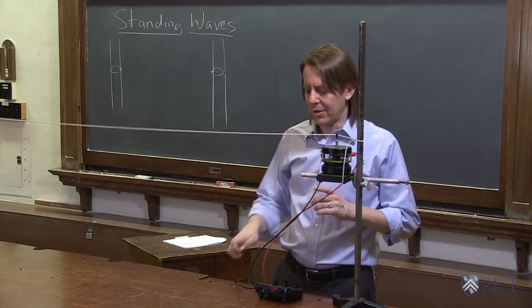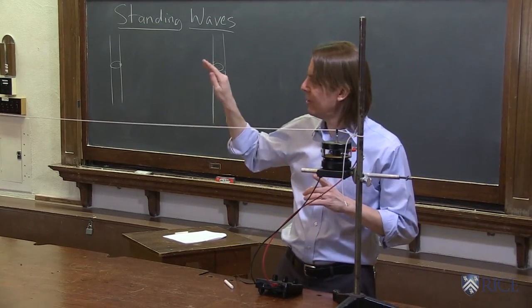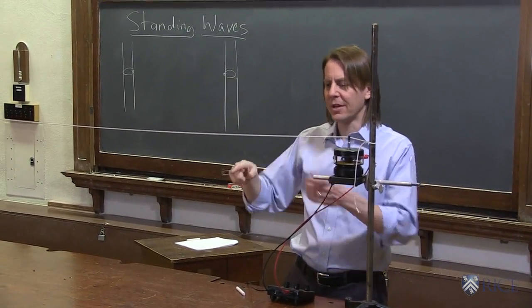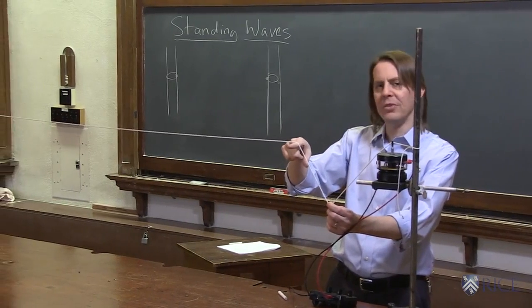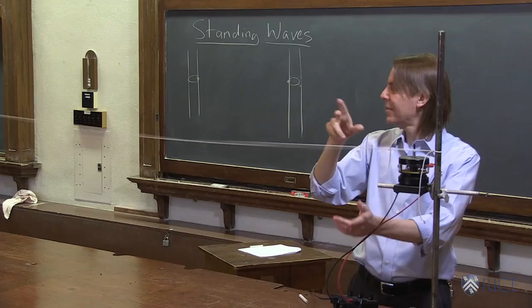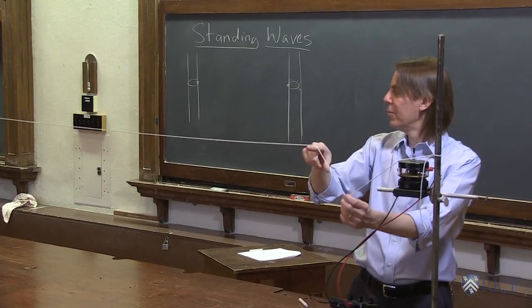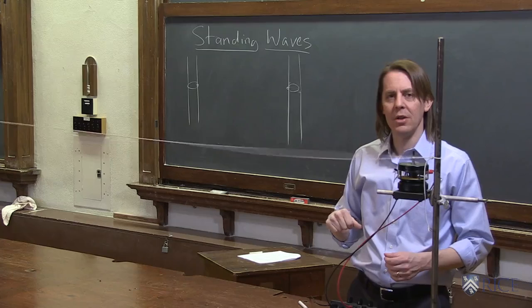Another thing about waves on a string is when they hit a hard interface like that rod, they bounce back inverted. So I can kind of show you that here. If I make a good pulse on this string, you might be able to see that it comes back inverted. That's a little fast, so we'll try to slow it down or show you a clip of another one that we've done where you can see it better. But pulses invert when they hit a hard boundary.